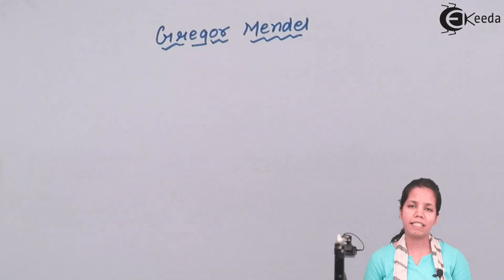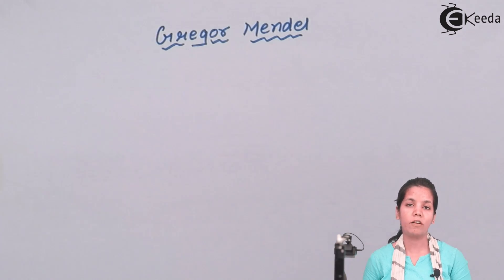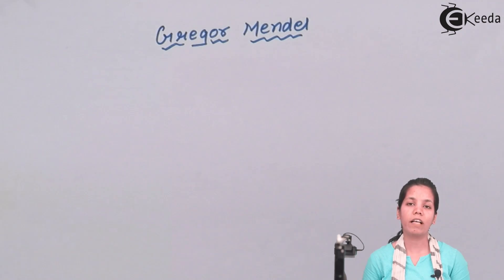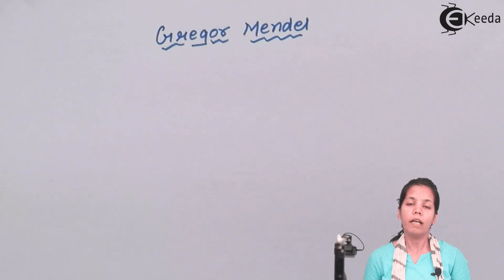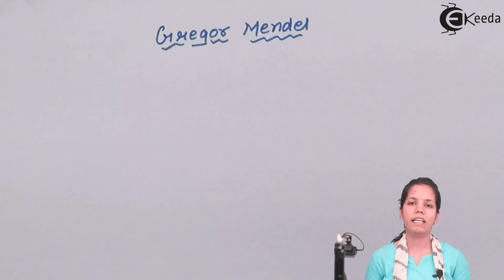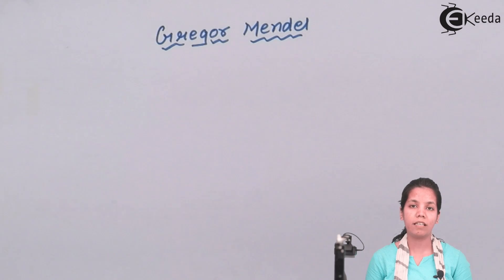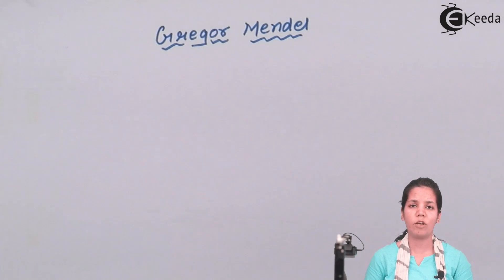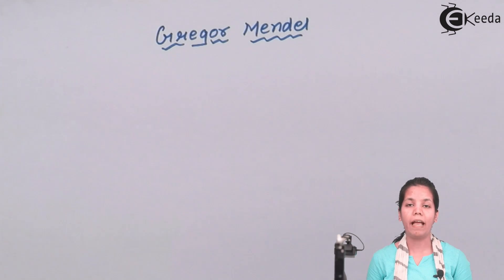Gregor Mendel was basically from Georgia. He was a monk who was the father of genetics. Did he get a Nobel Prize for his achievements? No. In fact, he was called the father of genetics only after his death. He basically laid down the foundation for the genetics which we are studying today — transcription, translation, genes, introns, exons — all those things were laid down by Mendel.